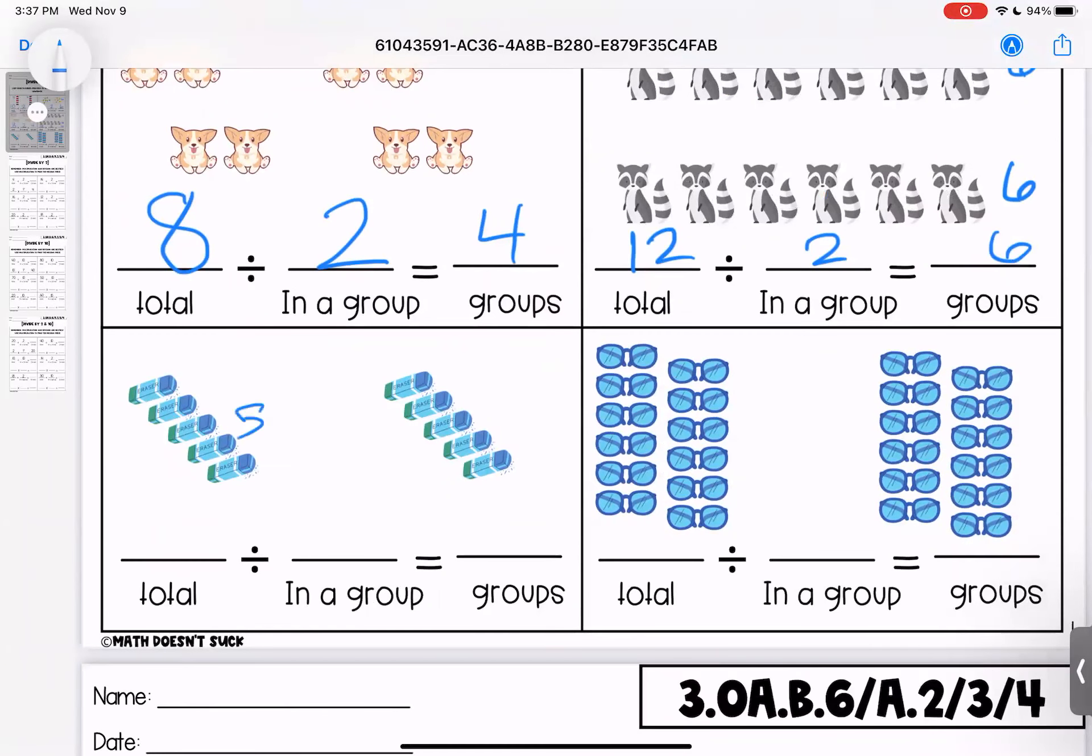Here we have five and five. So our total is ten. They're divided into two groups. Each group has five. Ten divided by two is five. Here we have two, four, six, eight, ten, twelve here and twelve here. So my total is twenty-four. There's two groups. Twenty-four divided by two gives me twelve.